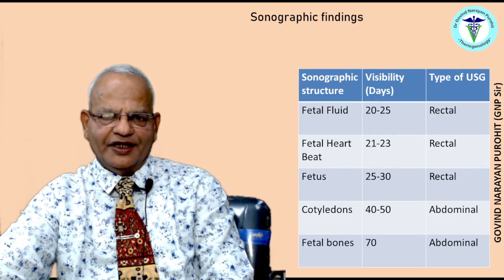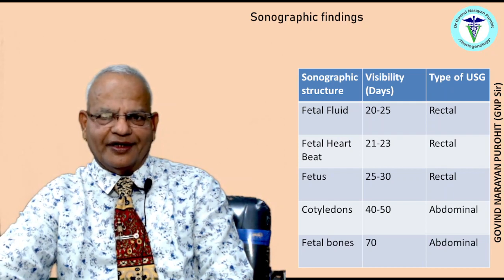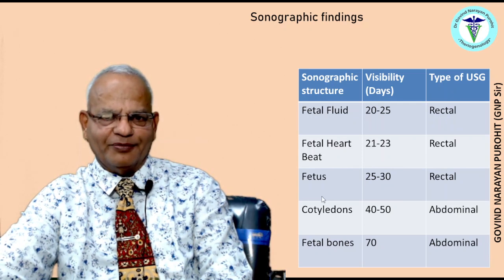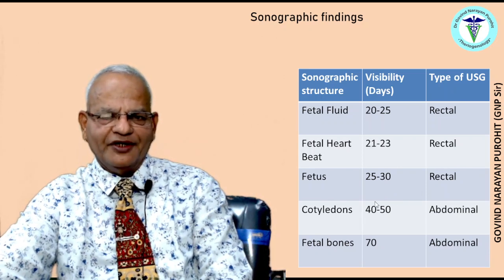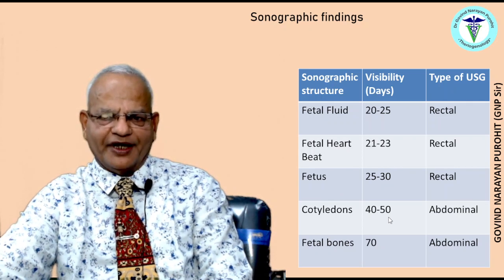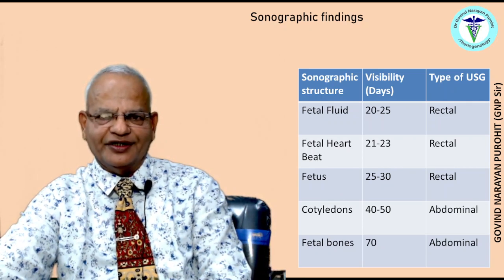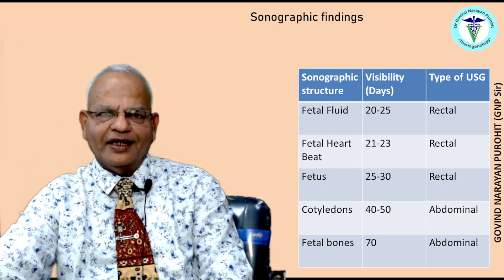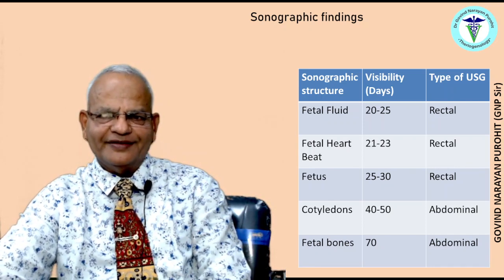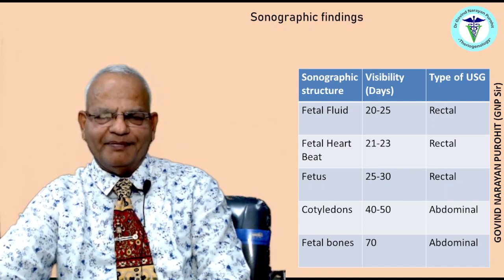The different fetal structures that appear on ultrasound: fetal fluid appears at day 20 to 25 by transrectal probe; fetal heartbeat first appears by day 21 to 23 by transrectal probe; the fetus itself appears by day 25 to 30 using a transrectal probe. When using only a convex probe transabdominally, the first thing to appear is the cotyledons between day 40 to 50. Gestational age can be predicted based on cotyledonary size, bi-parietal diameter, or crown-rump length. Fetal bones appear by day 70.